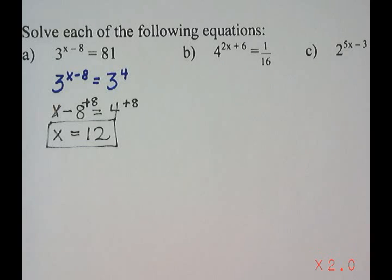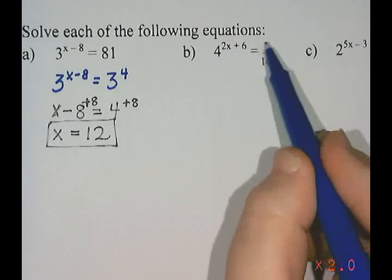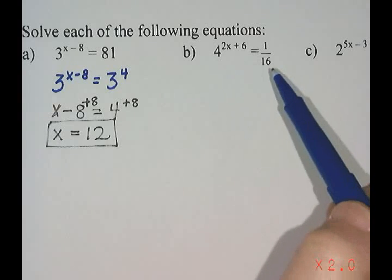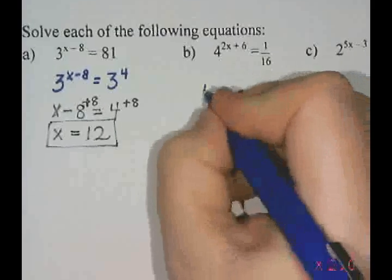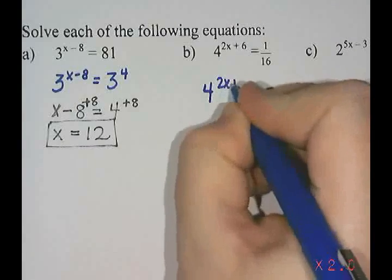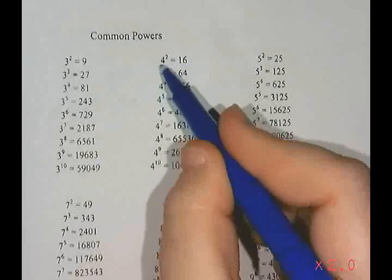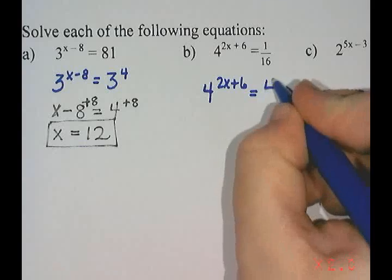The next equation: 4 to the power of 2x minus 6 equals 1 over 16. I want to write both sides using the same base. The 4 is the smaller of the two, so I'll see if I can write 1 over 16 as a power of 4. Looking at my power sheet, I see that 16 is 4 squared.